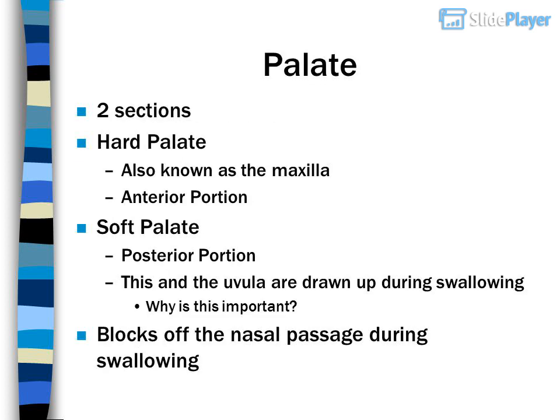Palate has two sections: hard palate and soft palate. The hard palate is also known as the maxilla — the anterior portion. The soft palate is the posterior portion. This and the uvula are drawn up during swallowing. Why is this important? It blocks off the nasal passage during swallowing.